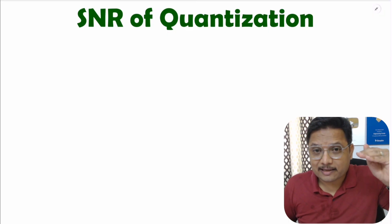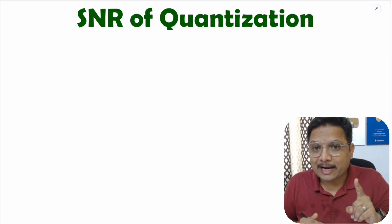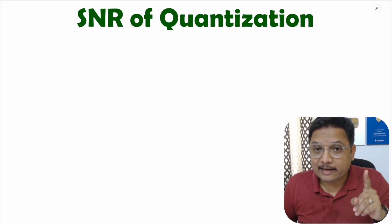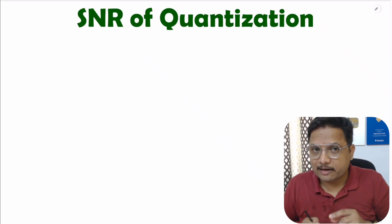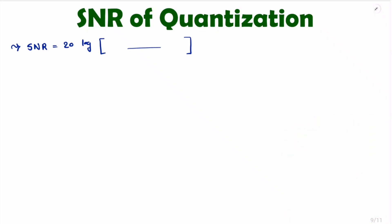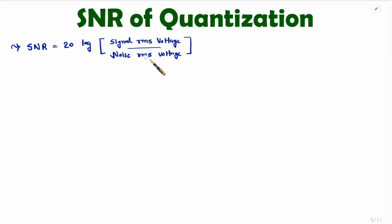Signal to noise ratio is a ratio of signal to noise. If you calculate that in terms of dB, then it will be 20 log of signal voltage divided by noise voltage. So SNR in terms of dB will be 20 log of signal RMS voltage divided by noise RMS voltage. If you consider signal and noise in terms of power, then there should be 10 log of signal power divided by noise power. But here we are considering RMS value in terms of voltage, that's why we use 20 log.